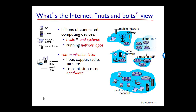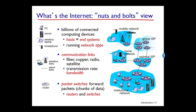End systems are connected by a network of communication links and packet switches. There are many types of communication links made up of different types of physical media, including coaxial cable, copper wire, optical fiber, and radio. Different links can transmit data at different rates, with the transmission rate measured in bits per second. When one end system has data to send to another, the sending end system segments the data and adds header bytes to each segment. The resulting packages of information, known as packets, are then sent through the network to the destination end system, where they are reassembled into the original data.